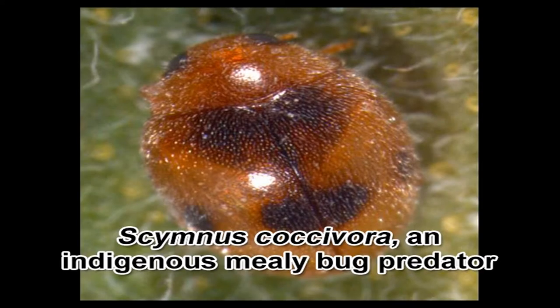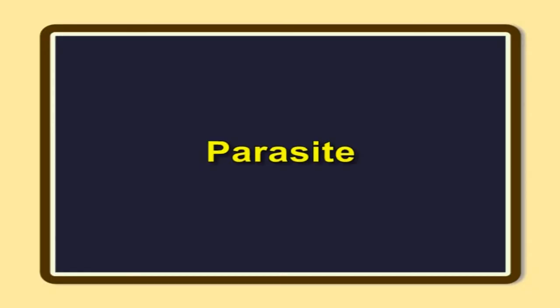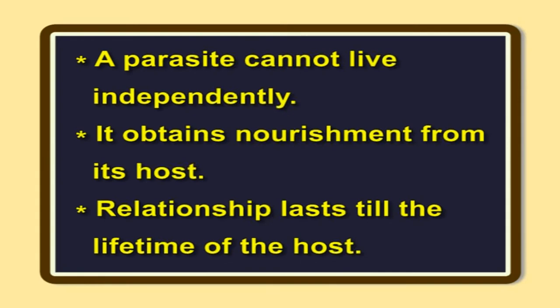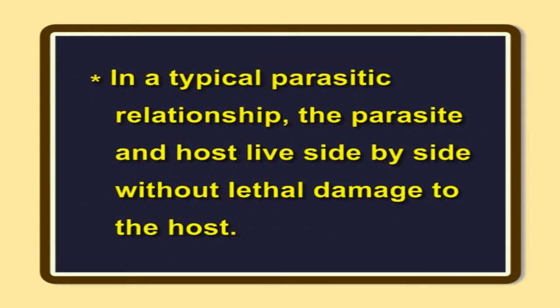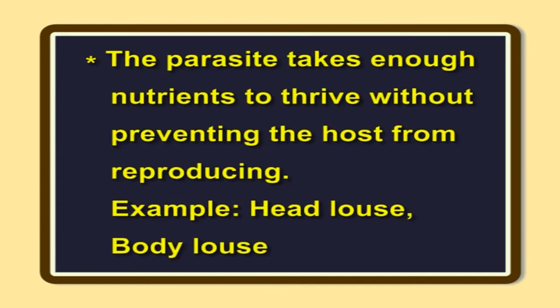Parasite. A parasite cannot live independently. It obtains nourishment from its host. The relationship lasts till the lifetime of the host. In a typical parasitic relationship, the parasite and host live side by side without lethal damage to the host. The parasite takes enough nutrients to thrive without preventing the host from reproducing. Examples: head louse, body louse, etc.